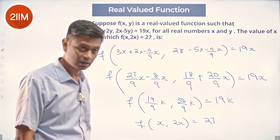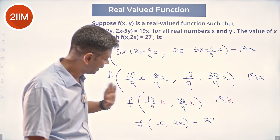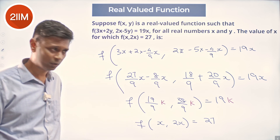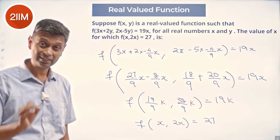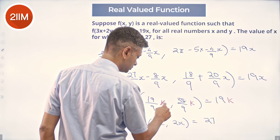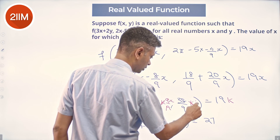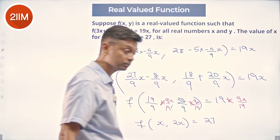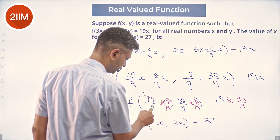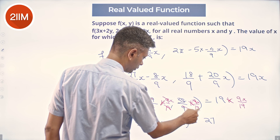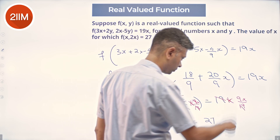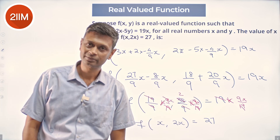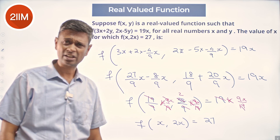Suppose I put k = 9x/19. Then f(19/9·k, 38/9·k) = 19k becomes f of x comma 2x equals 19·(9x/19), and the 19s cancel, giving f(x, 2x) = 9x.